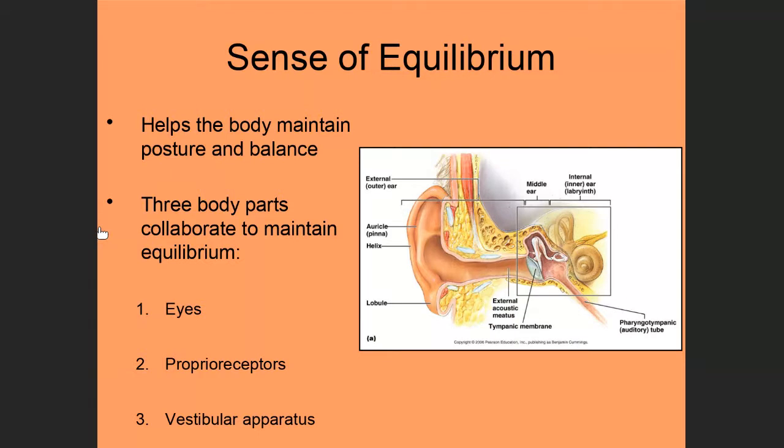Proprioceptors are a special type of receptor that's found in tendons, ligaments, joints, and muscles. These are stretch receptors, so they're responding to stretch in the body. Proprioceptors work along with the eyes to give us information about the position of our body. If I reach out my leg or I reach out my arm, proprioceptors in those structures are going to detect that stretch, and I'm going to feel that movement and know that the position of my body has changed.